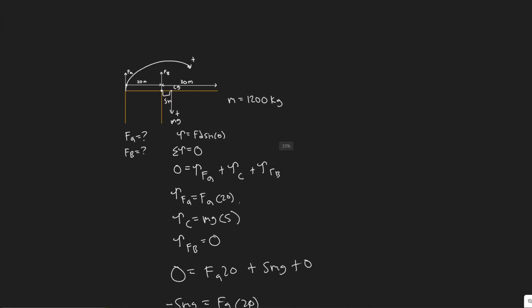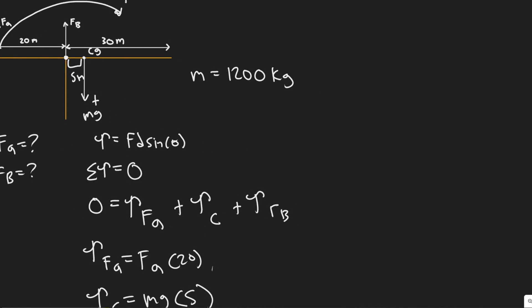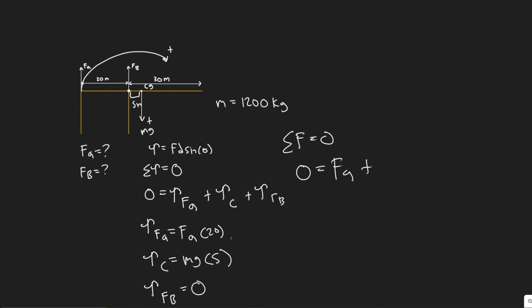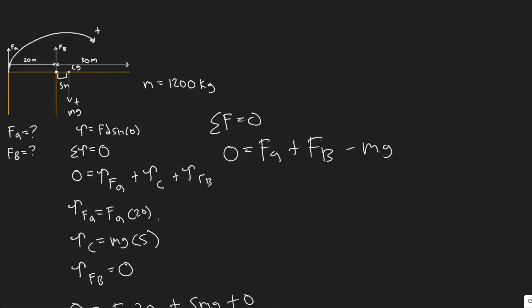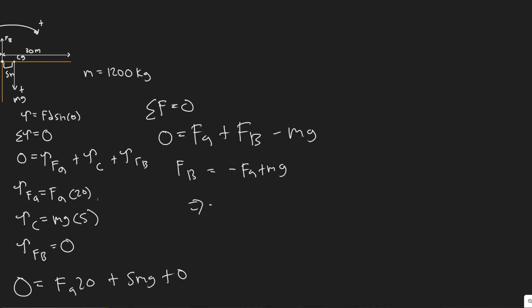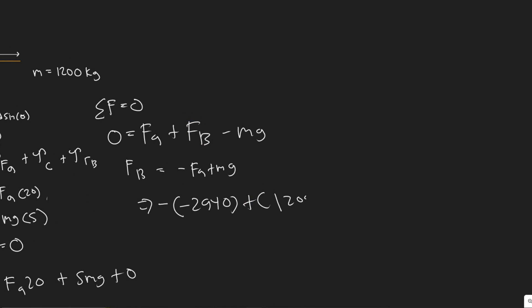To find FB, we sum the forces in the Y direction, which must equal zero since the structure isn't moving. So FA plus FB minus mg equals zero, meaning FB equals minus FA plus mg. Substituting: minus negative 2940 plus 1200 times 9.8 gives FB equals 2940 plus 11760, so FB equals 14,700 Newtons.